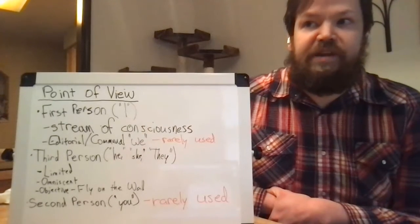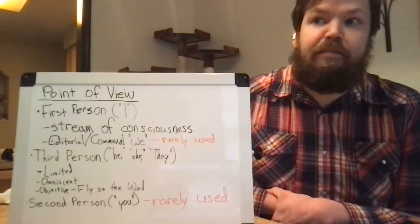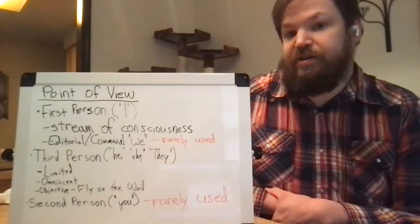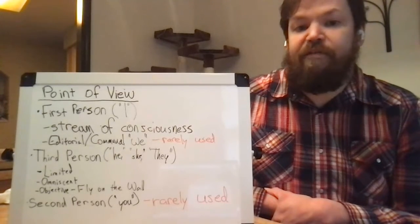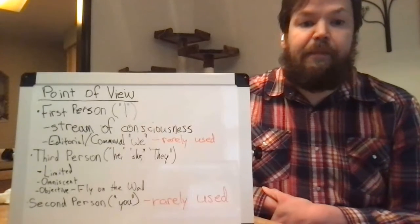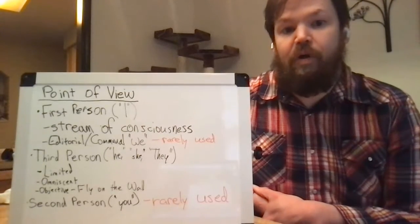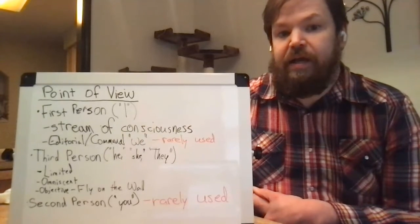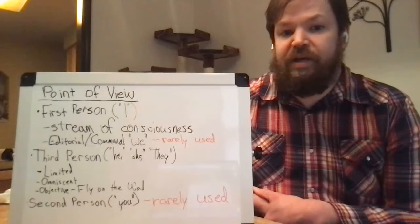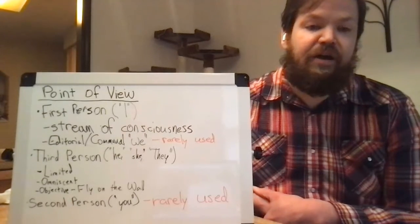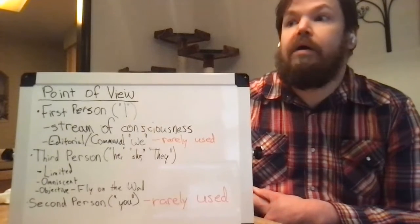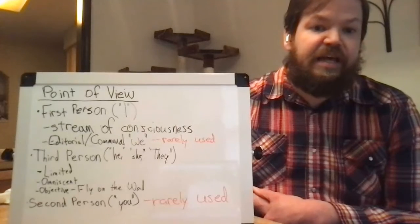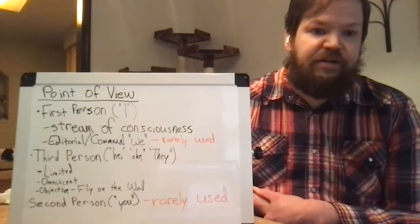Omniscient is where you can get into all of the different characters' heads. 'He thought this, but his mother thought differently. His girlfriend thought this, and her sister thought something else.' You can move from one place to a different place. Objective is kind of a fly-on-the-wall approach. In fiction, you can tell characters' thoughts and get inside their heads, but with objective point of view, you can't get into any character's head — it's like a movie. You just watch the action and watch what happens.